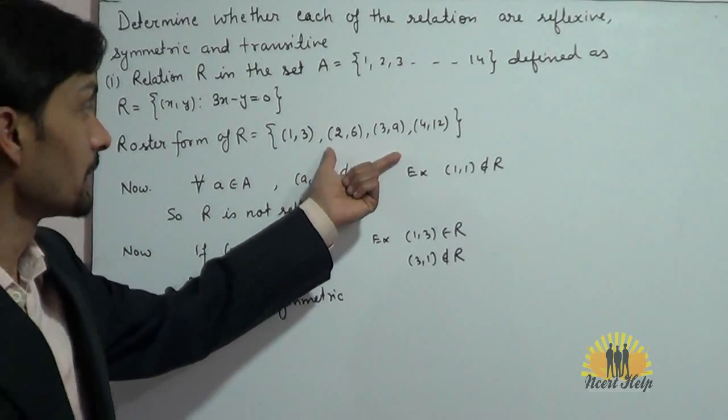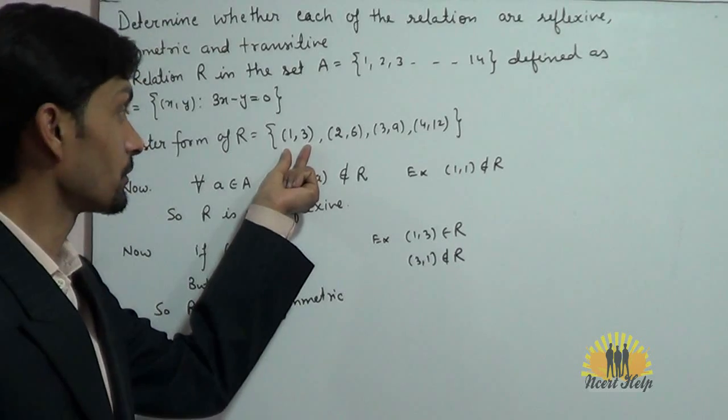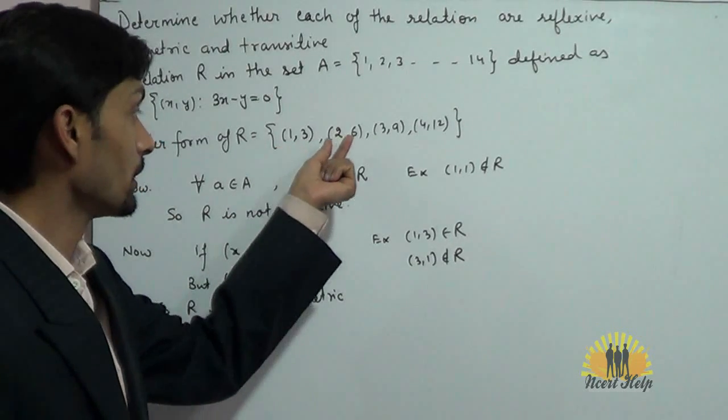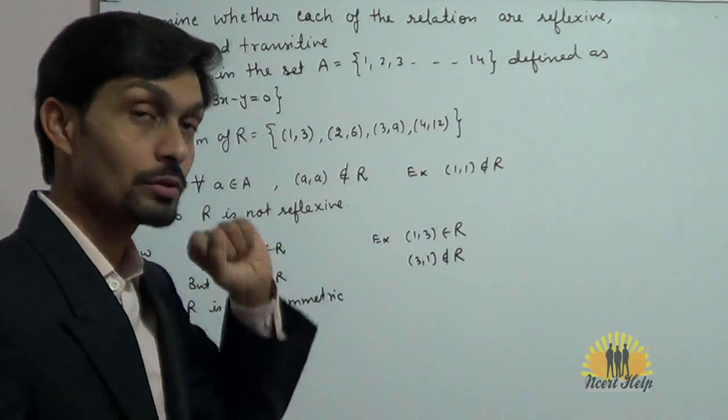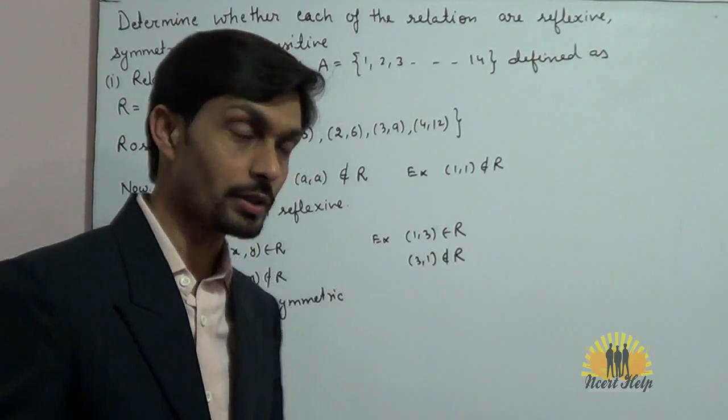Clearly, it can be observed that (1, 3) is there but (3, 1) is not there. Again, (2, 6) is there but (6, 2) is not there. That means this relation is not symmetric.